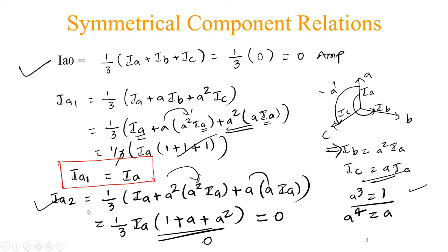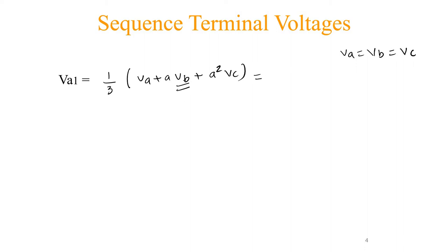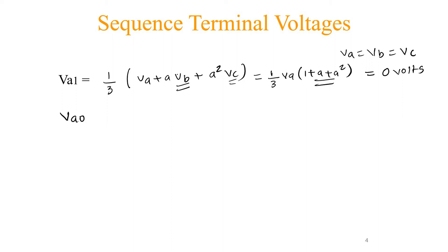Now let us find the sequence components with respect to the voltages. Va1 equals one-third times (Va plus A·Vb plus A²·Vc). Since Va equals Vb equals Vc, we can represent all terms by Va. Taking Va common: one-third·Va·(1 plus A plus A²) which equals zero. So Va1 equals 0 volts. Similarly, Va0 and Va2 also yield the term (1 plus A plus A²), so Va0 equals Va2 equals 0 volts.